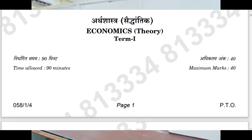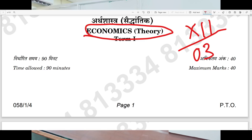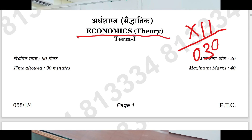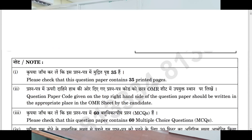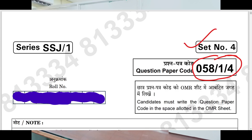Hello students, this is the economics answer key for class 12, subject core code 030. Those who have this subject can check their answers. This is the economics theory question paper answer key — if you have this question paper code number and set, you can check your answers quickly.